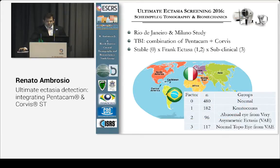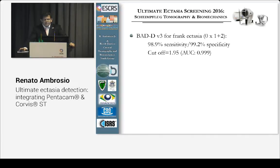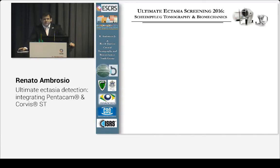We have cases with normal corneas — topographically and stable on clinical setting — 181 patients with clinical keratoconus with one eye selected per patient, and 117 eyes with very asymmetric ectasia. From those patients, 96 had no surgery in the more advanced eye. We combine and look at the parameters. The D is very good for frank ectasia: for normals versus keratoconus and ectatic eyes, sensitivity and specificity are very good with a cutoff around 1.95. But for the topographically normal eye, you have 81.2% sensitivity, needing a cutoff of 1.07 which sacrifices specificity. The best cutoff is around 1.4, but that gives very limited sensitivity for those subclinical cases.